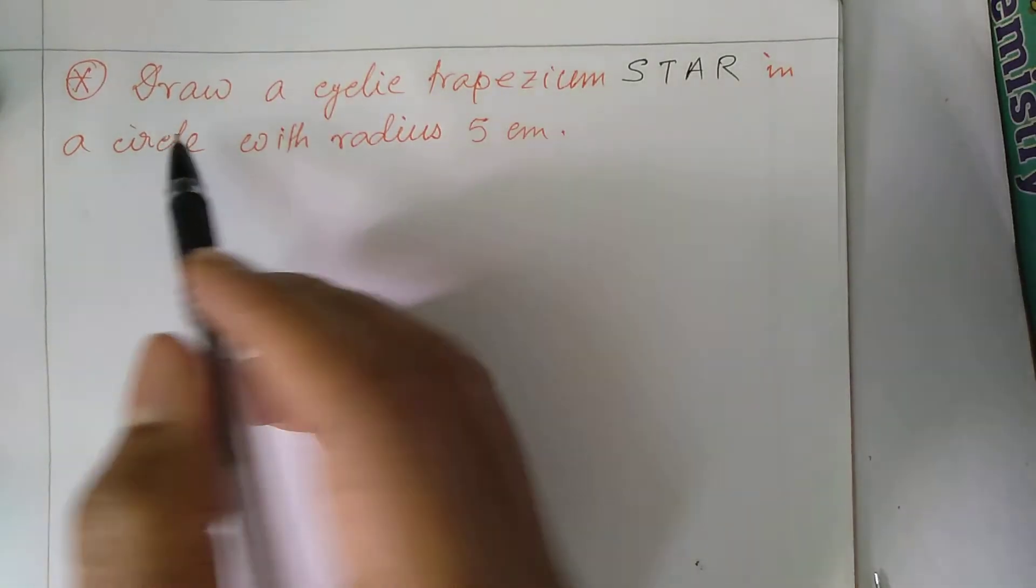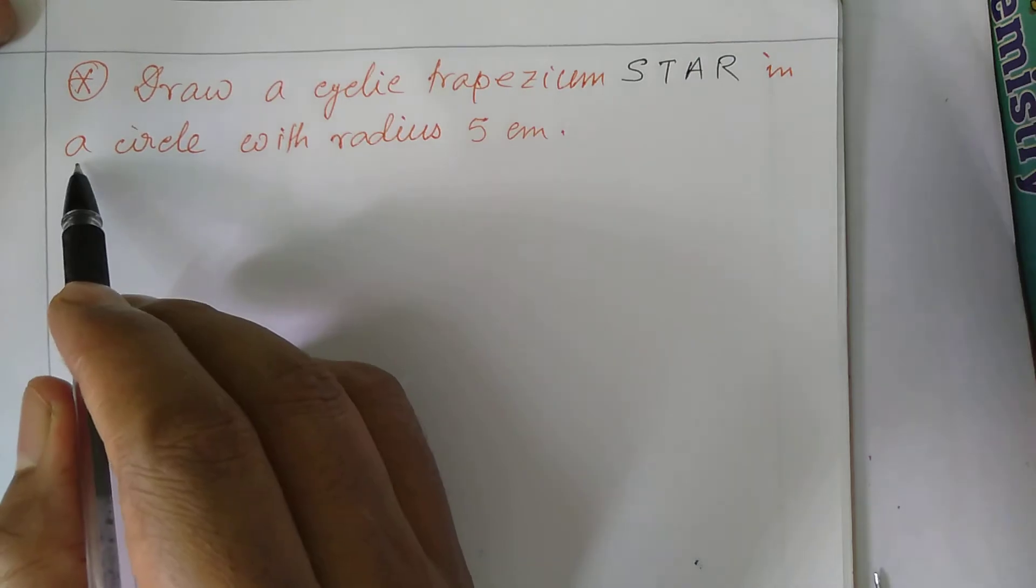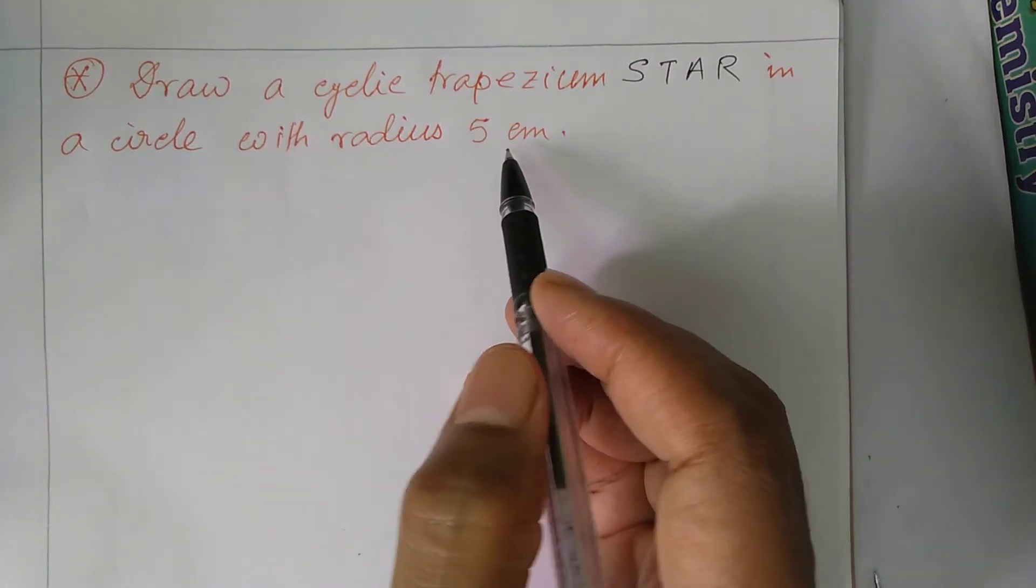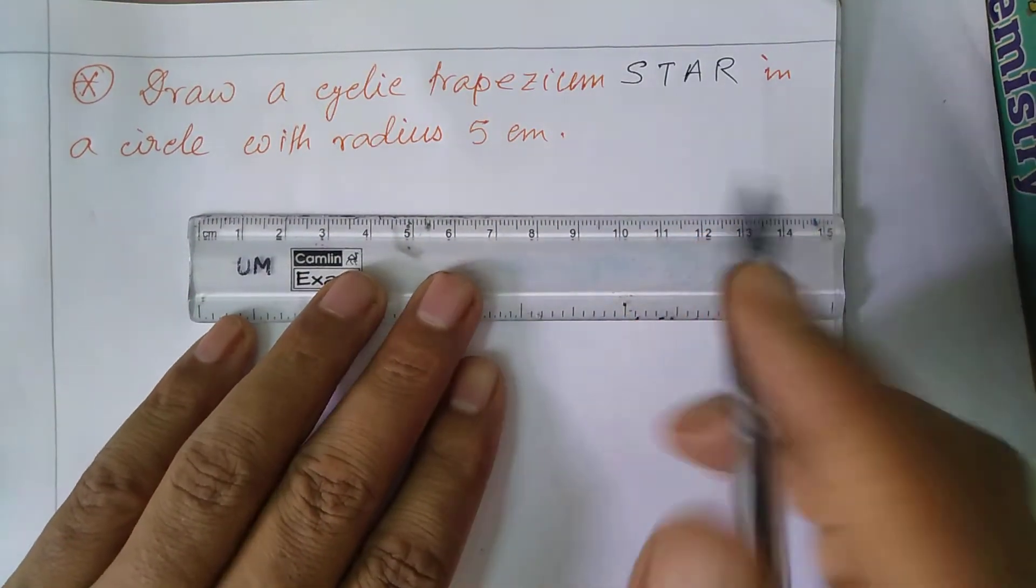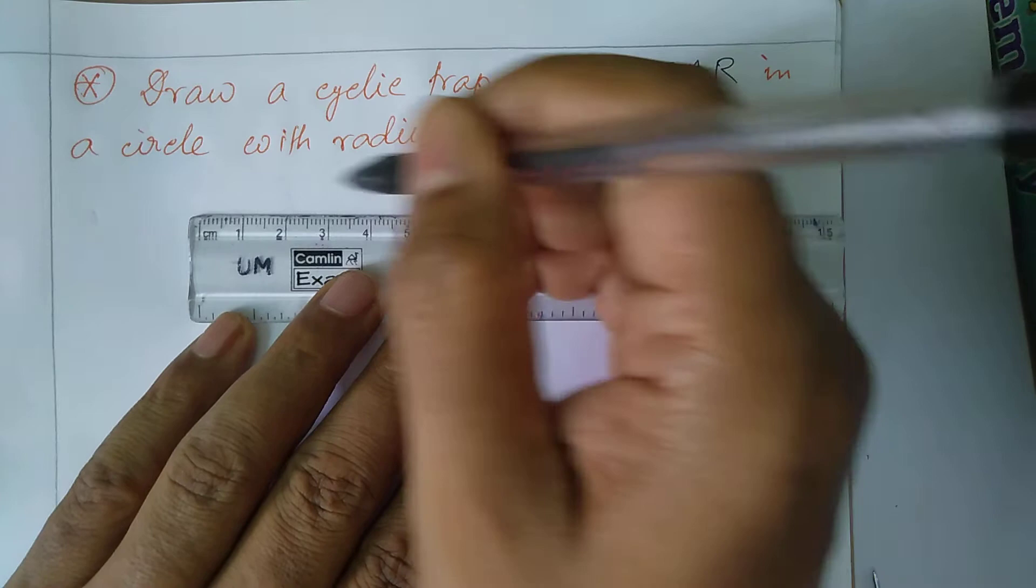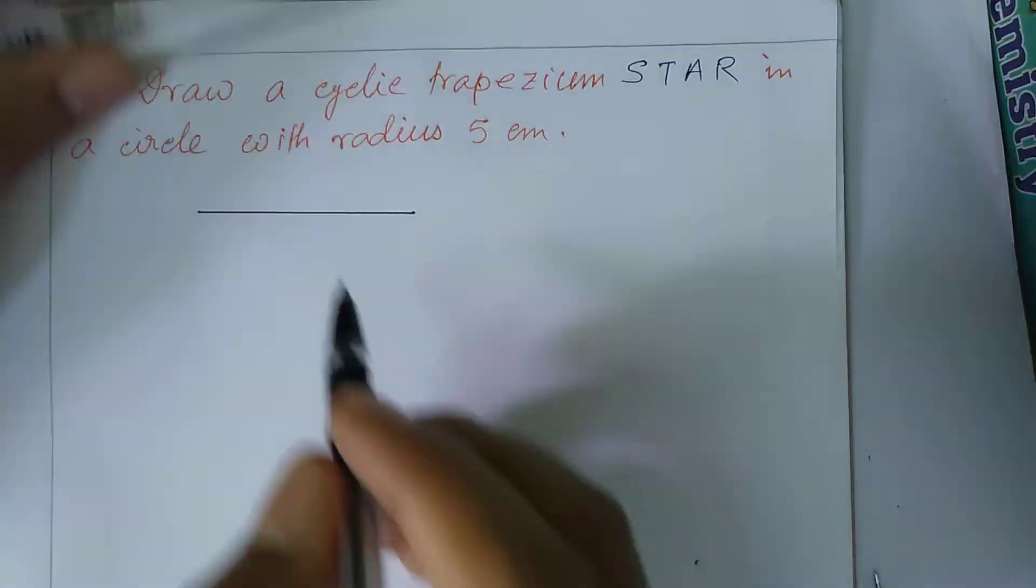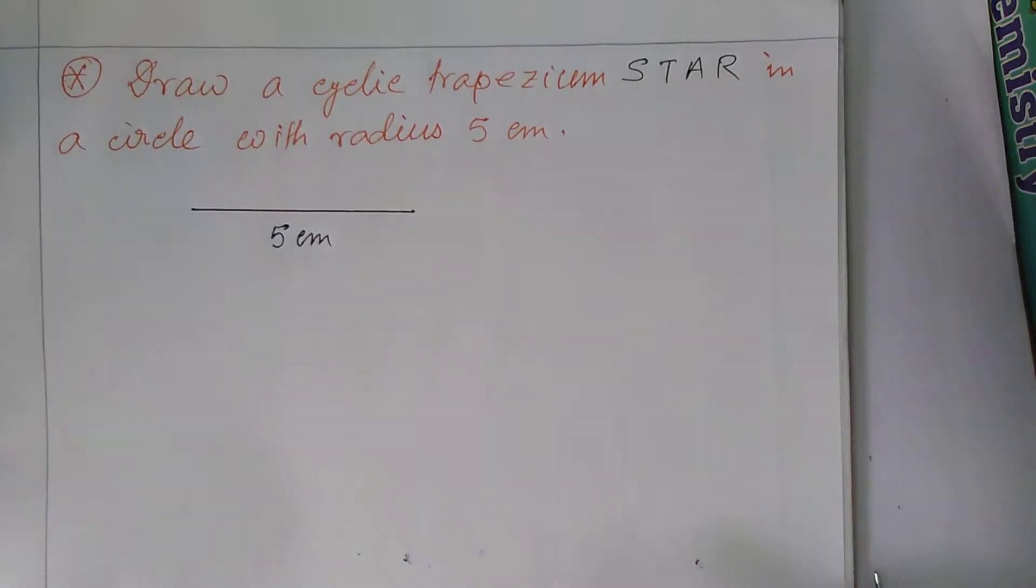Draw a cyclic trapezium STAR in a circle with radius 5 cm. For this we first take a line segment of length 5 cm. This is 5 cm.